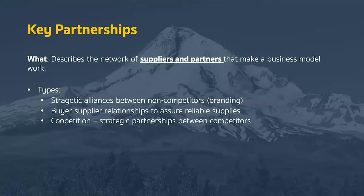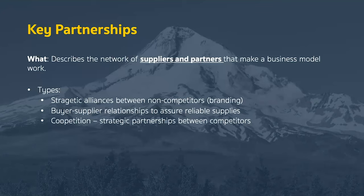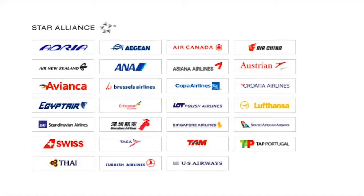Key partnerships describe the network of suppliers and partners that make your business model work. You might have a strategic alliance between non-competing businesses — this often happens in sports, where a team is sponsored by Nike or Adidas. There are also buyer-supplier relationships, which are key to ensuring reliable supplies — for example, if you develop computer chips like Intel, your material suppliers are extremely key partners. Finally, there is co-opetition, where you have strategic partnerships between competitors, such as airline alliances like the Star Alliance, which gives users benefits across different airline systems even though the airlines remain competitors.